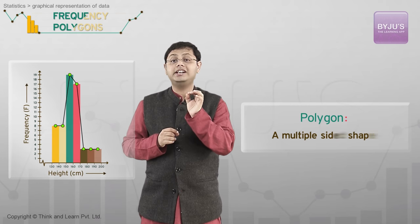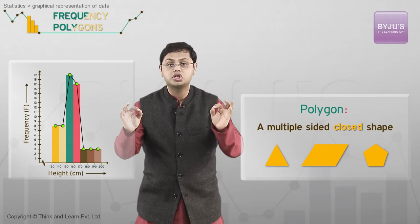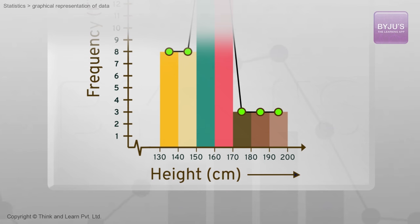A polygon is a multi-sided shape, but before all, it is a closed shape. So how do we get that? We add a class interval before the first one in the data and do the same on the other end of the histogram as well. Since the first class interval is 130 to 140, we add another with 120 to 130.